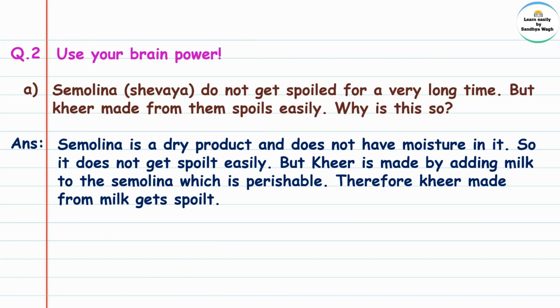Answer: Semolina is a dry product and does not have moisture in it, so it does not get spoiled easily. But khir is made by adding milk to the semolina, which is perishable. Therefore, khir made from milk gets spoiled.